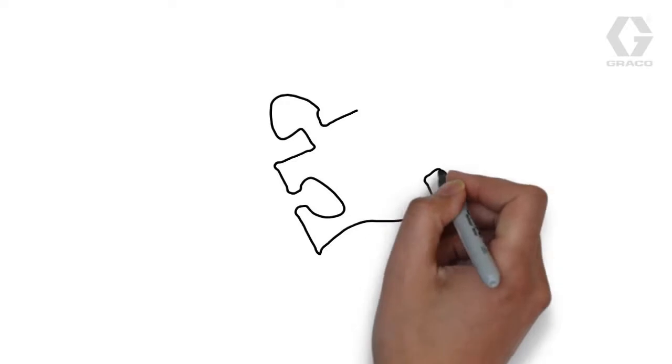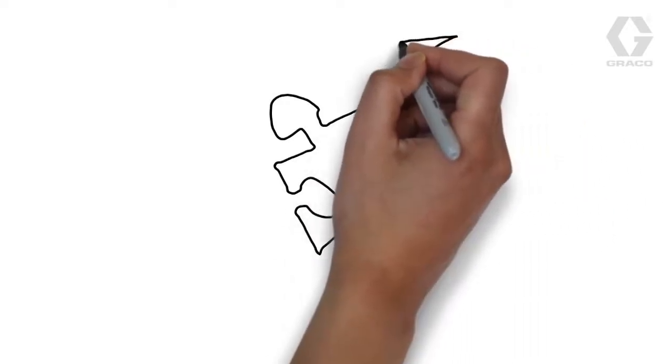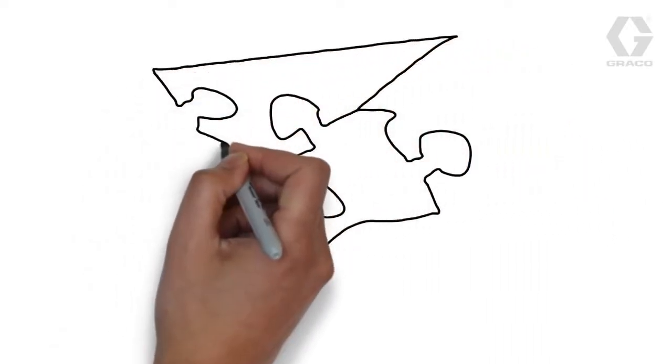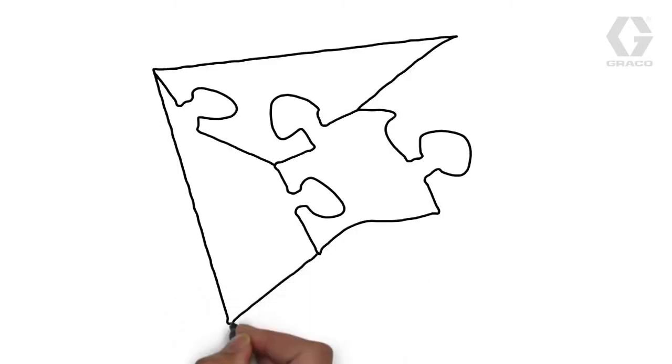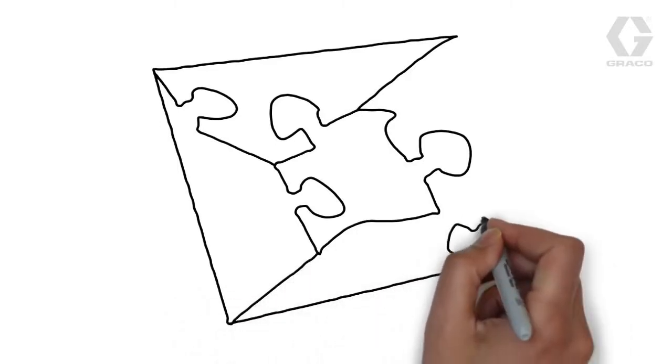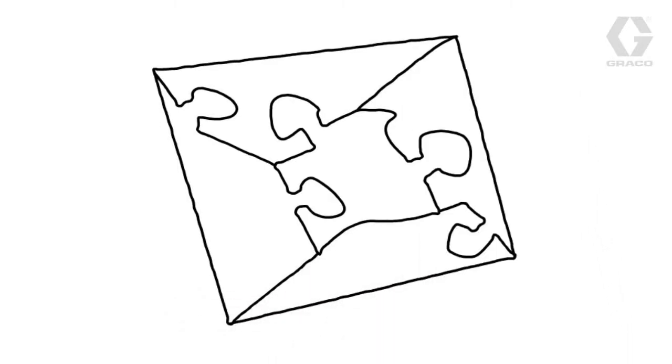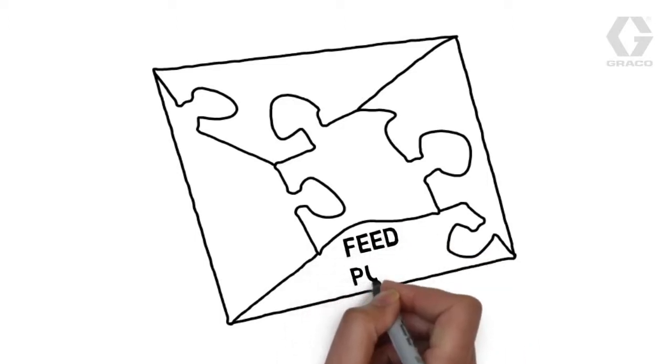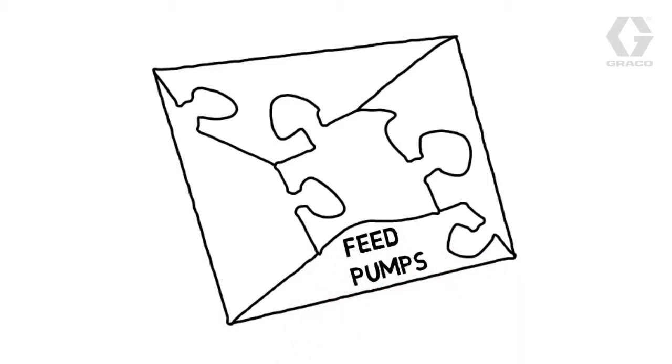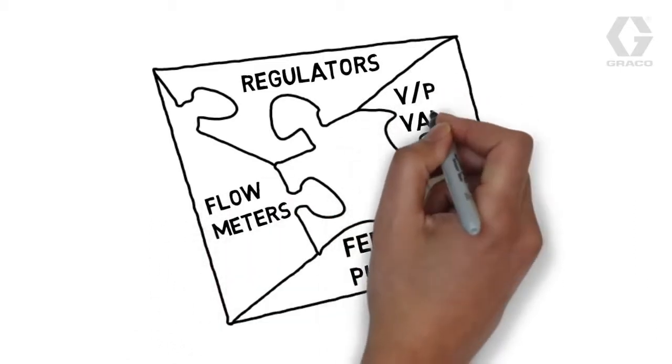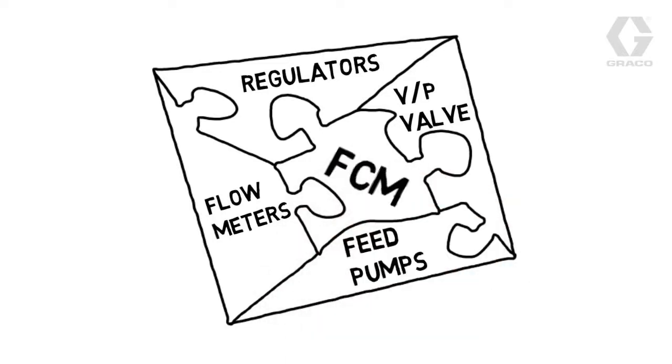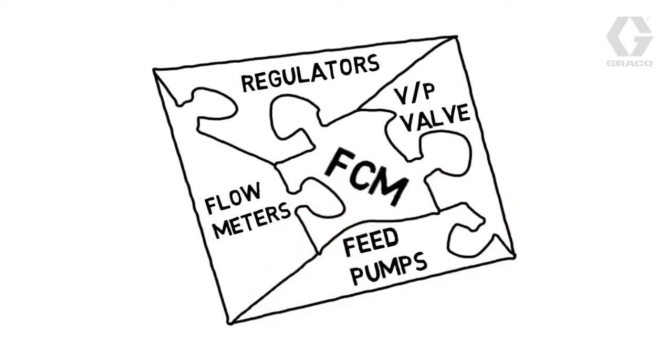So let's talk about the brains and what goes on behind the scenes. The critical components of the AGP system are feed pumps, regulators, flow meters, V to P valve, FCM. Let me show how these components work together.